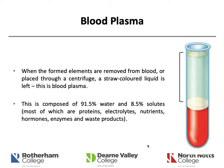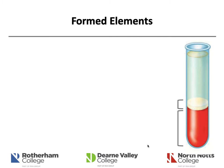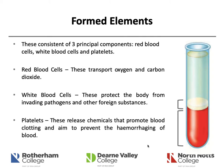Looking specifically at plasma, it looks like a straw-coloured substance and is generally composed of water but also proteins and other solutes — things like electrolytes, nutrients, hormones, enzymes, and waste products. The formed elements are red blood cells, white blood cells, and platelets. Red blood cells transport oxygen and some carbon dioxide; white blood cells protect the body from invading pathogens and foreign substances; and platelets help promote blood clotting and prevent haemorrhaging.